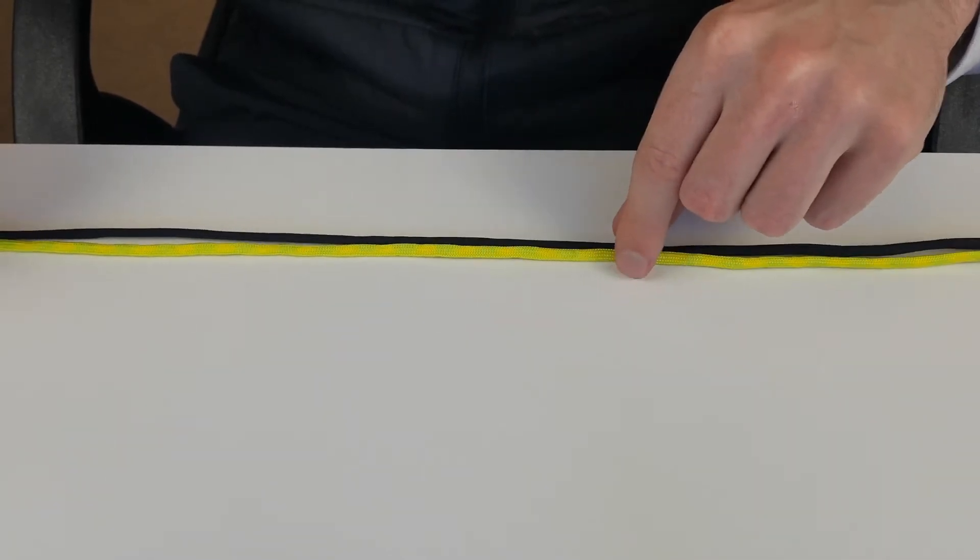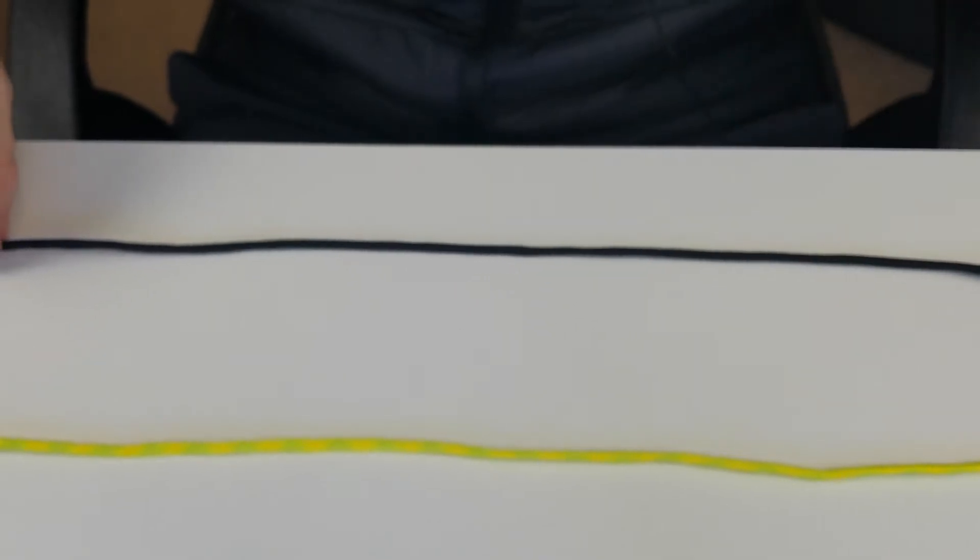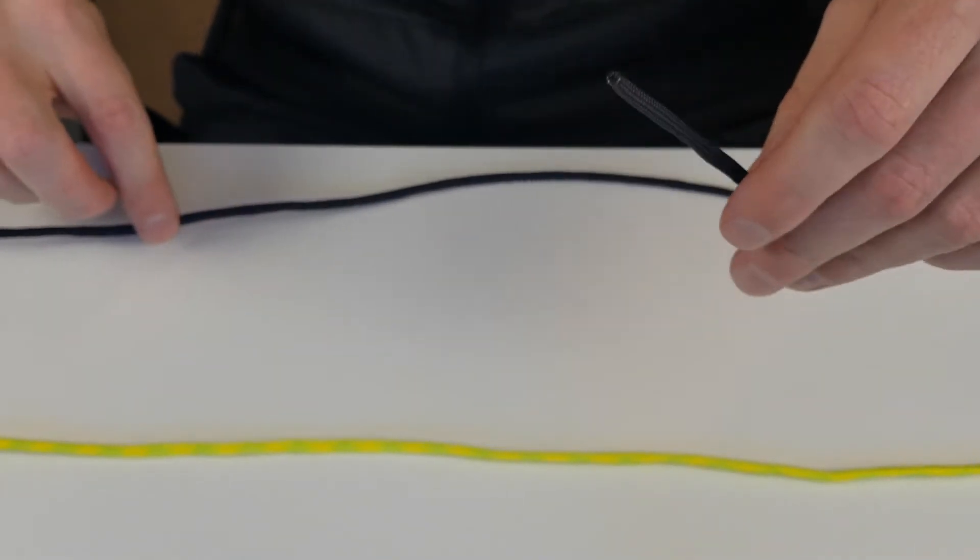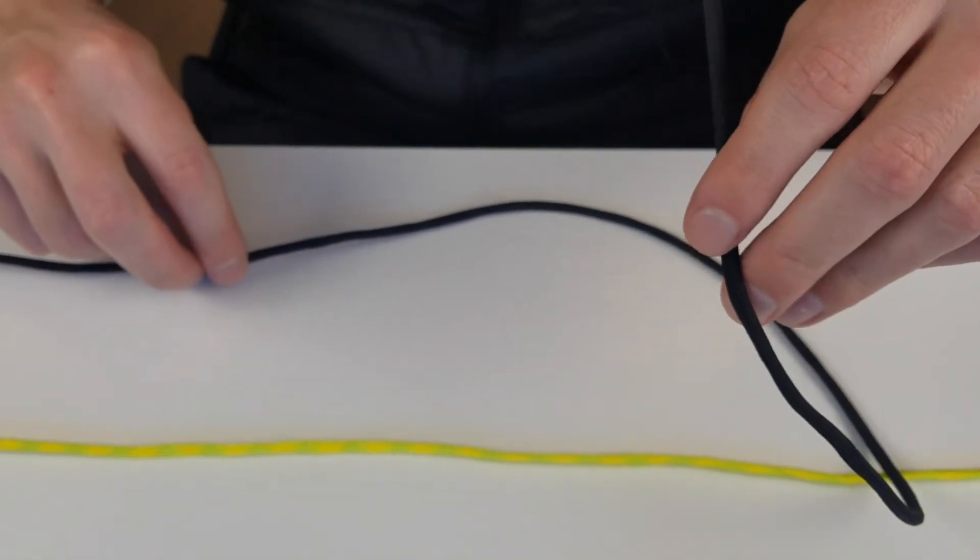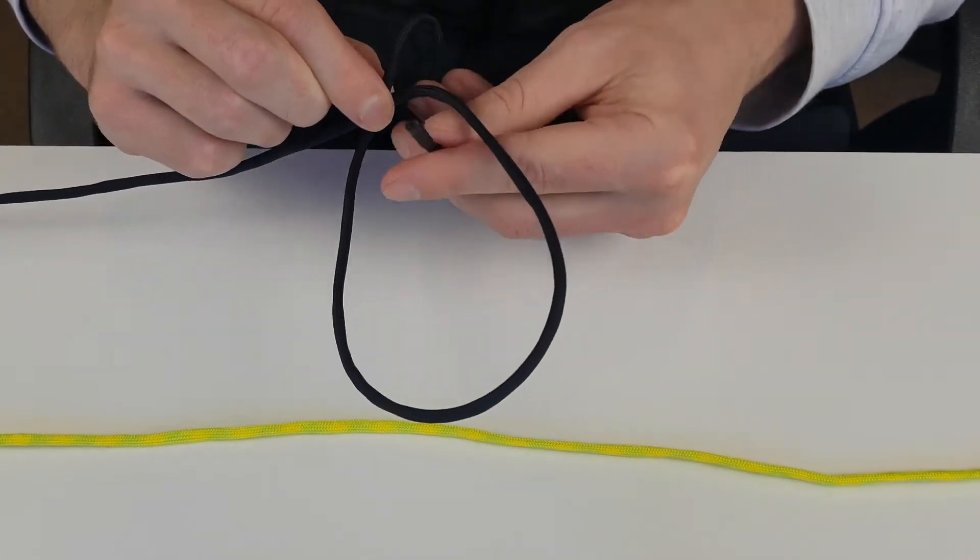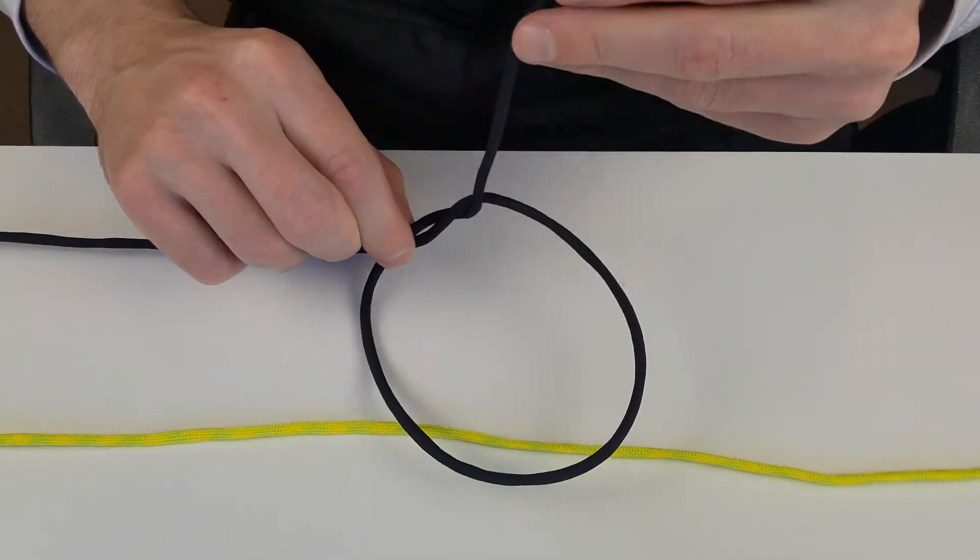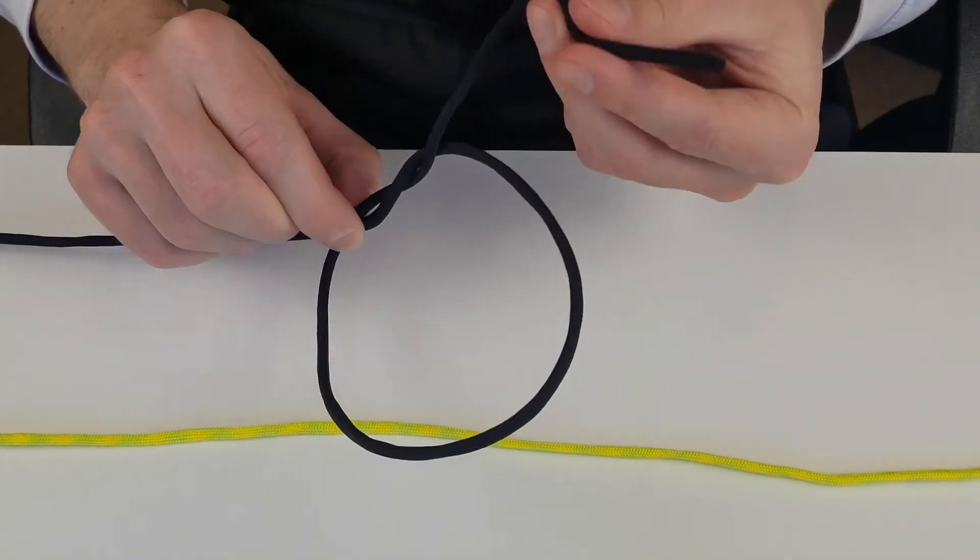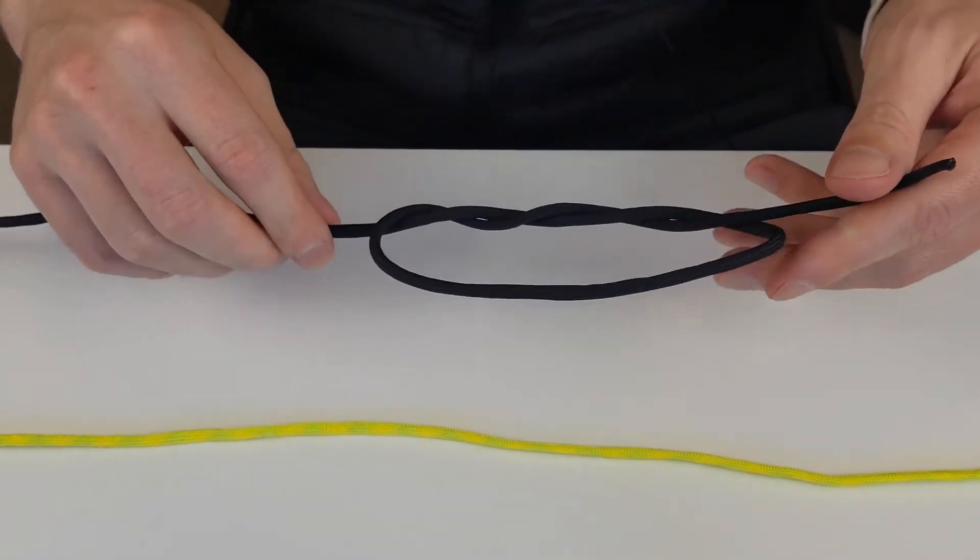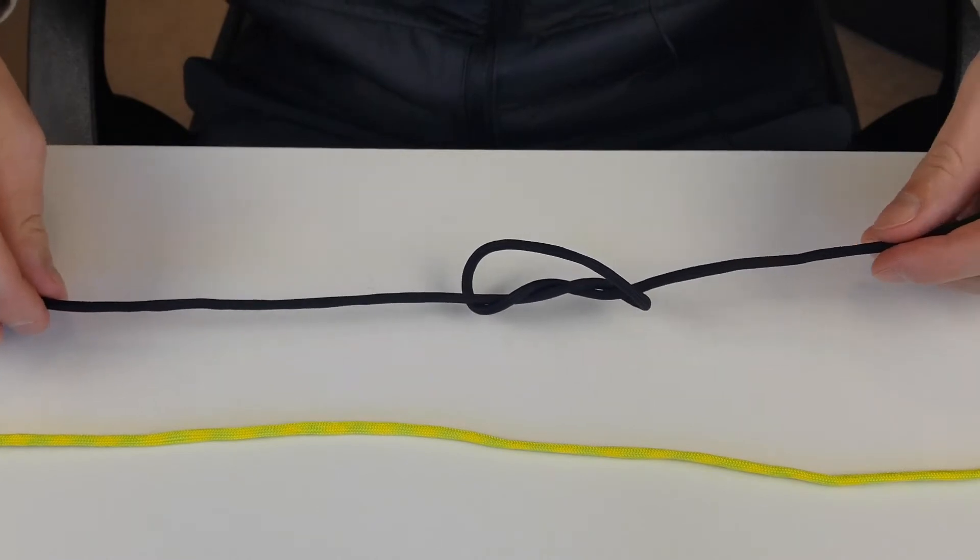I'll just show you with one line so it makes things easier. All you're going to be doing is taking your tag end and forming a simple overhand knot. We're going to take our line and come up through, and then take it and do it one more time, coming through the bottom.